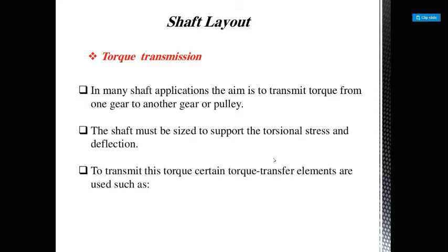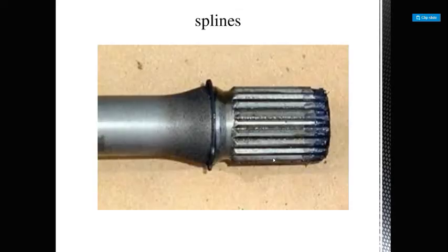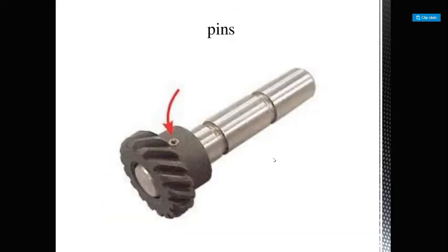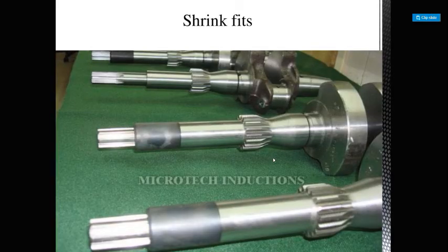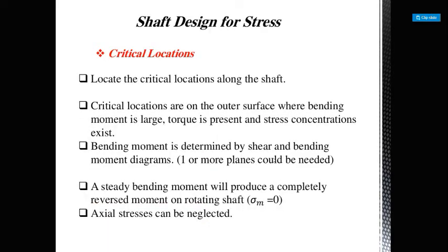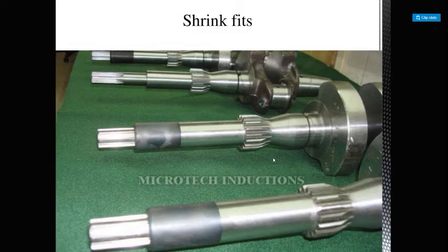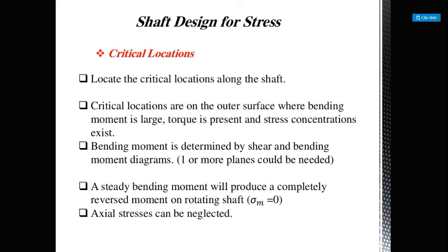In many shaft applications, the aim is to transmit torque from one gear to another gear or pulley. The shaft must be sized to support the torsional stress and deflection needed to transmit this torque. Certain torque transfer elements are used, such as keys, splines, set screws, pins, taper fits, and shrink fits.